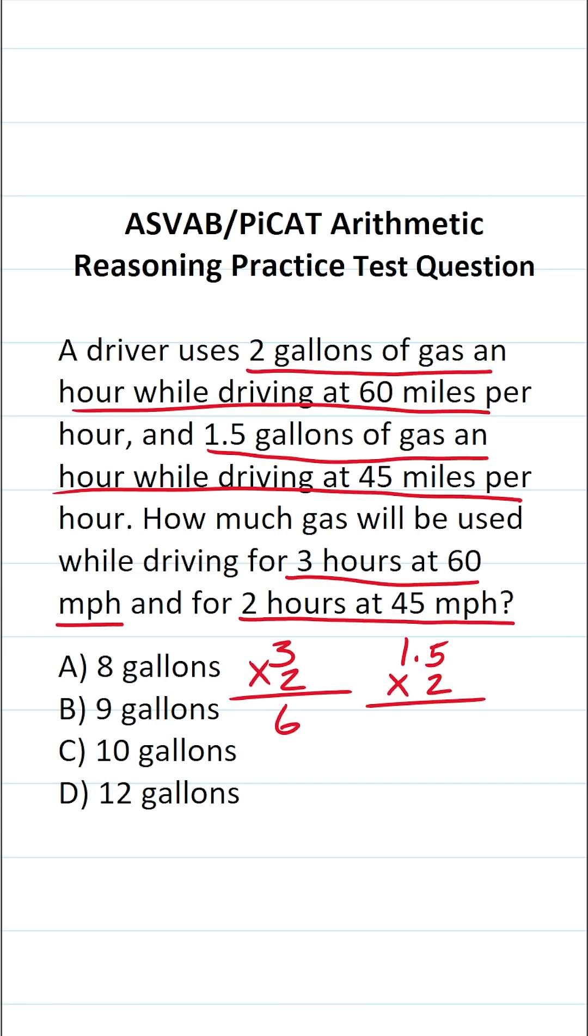And if you can't do that part mentally, again, when you multiply a decimal by a whole number, you take that decimal, you move it one place to the right. This becomes 15 times two, albeit with one decimal to move back into the left into our answer.